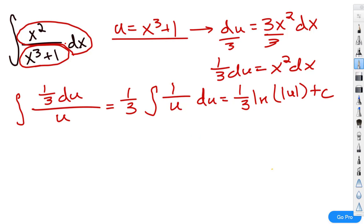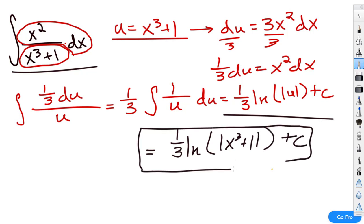Now, just like before, I know I sound like a broken record, but our original problem was in terms of x, so we want this to be in terms of x. So, our actual final solution is 1 third times the natural log of the absolute value of x cubed plus 1, and don't forget, as always, plus c.